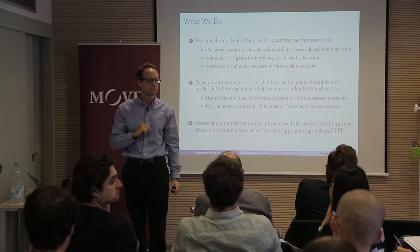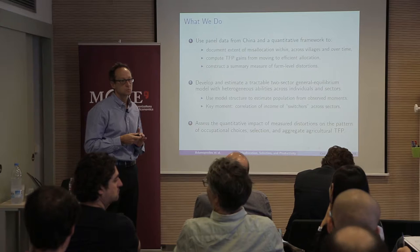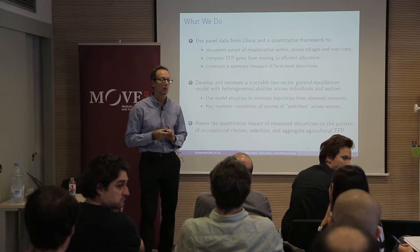At 0.7 hectare, that's already above the subsistence level — it's like a small farm. It's probably bigger than in Africa, where you have a village and everybody is working a very small farm.